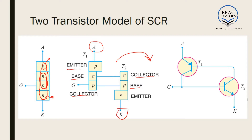If we convert this into a symbolic sketch, it becomes something like this. The anode is connected to the emitter of the PNP BJT. The collector of the PNP BJT is connected to the base of the NPN BJT. Again, the base of the PNP BJT is connected to the collector of the NPN BJT, and the emitter of the NPN BJT is connected to the cathode of the SCR. So this is the two transistor model.